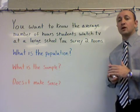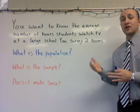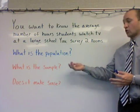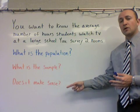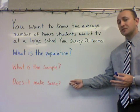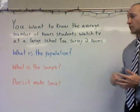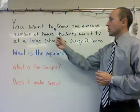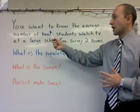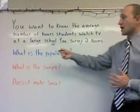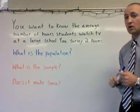Now we have an example of a form of sampling to look at. We're going to try to identify the population, identify the sample, and then ask ourselves whether it makes sense to use the sample in this case. The example: you want to know the average, or mean, number of hours students watch TV at a large school. You survey two classrooms.